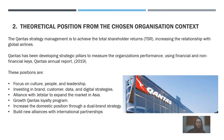The theoretical position from the chosen organization context. The Qantas strategy management is to achieve total shareholder returns — that means TSR — increasing the relationship with global earnings. Qantas has been developing strategic pillars to measure the organization's performance using financial and non-financial cases. This information was taken from the Qantas annual report 2019. These positions are focused on culture, people, and leadership.